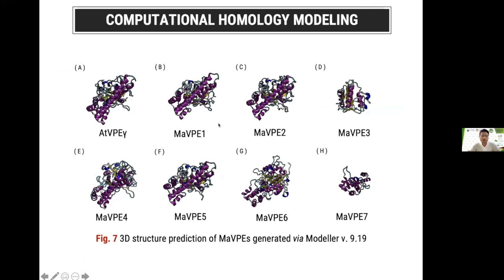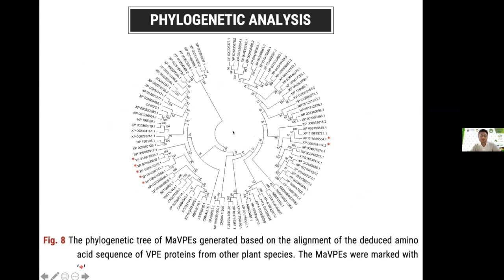We performed computational homology modeling to compare banana VPE with Arabidopsis thaliana VPE. MA VPE1, 2, 4, 5, and 6 are quite similar in terms of protein structure to Arabidopsis thaliana VPE. However, VPE3 and VPE7 are quite smaller in size and different compared to Arabidopsis thaliana VPE, mainly because their open reading frame length is shorter. We assume that VPE3 and VPE7 might not function as well as other VPEs in banana. Phylogenetic analysis classified MA VPE5 and MA VPE3 under the seed-type VPE category, while the remaining VPEs fall under the vegetative type, which are normally responsible for plant-pathogen interactions.